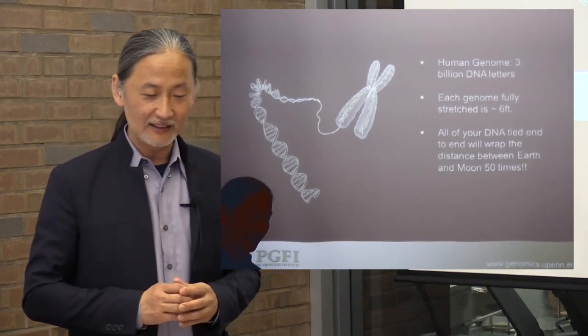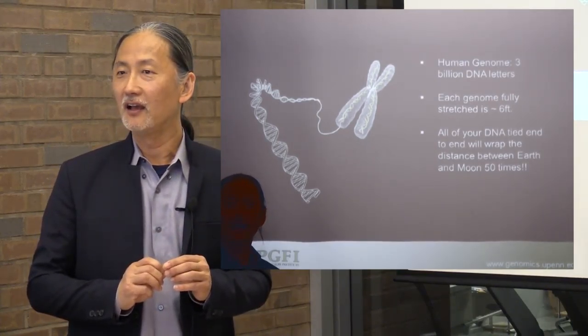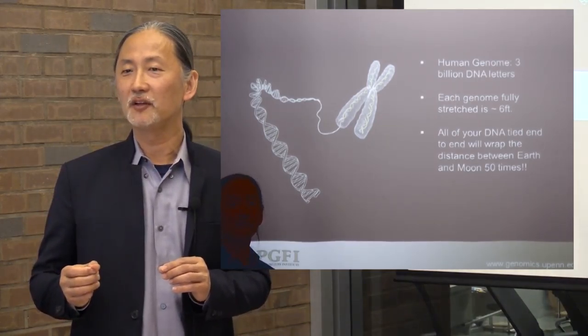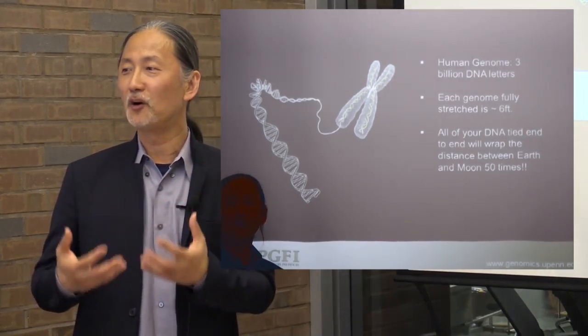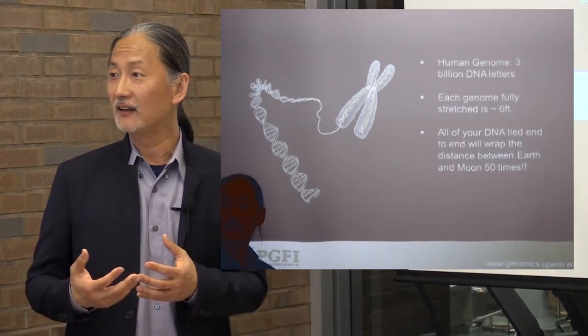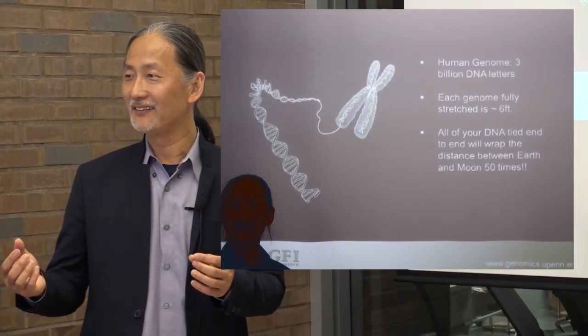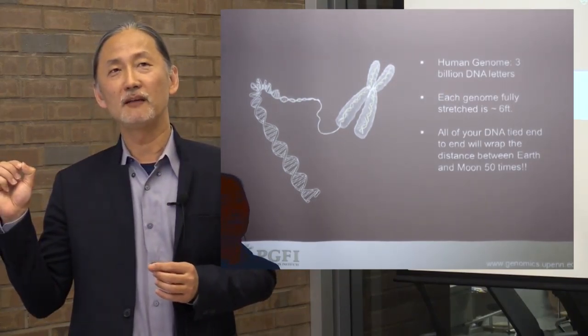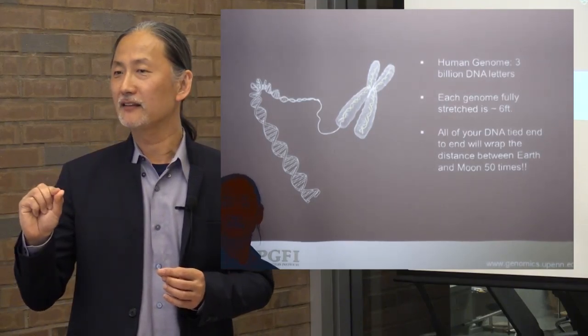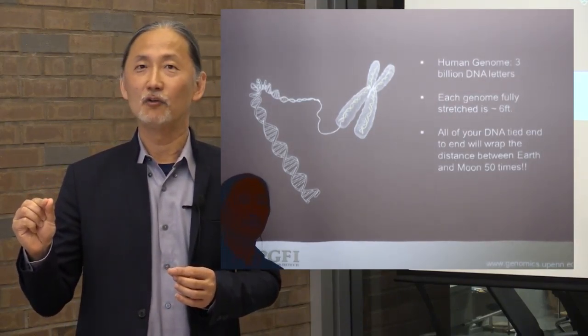One thing I find very useful in STEM sessions with high school students is getting them to think about all the different scales and measurements and how small things really are at the molecular level. If you took a letter of DNA and blew it up to the size of a grain of rice, your hand compared to a letter of DNA would be the size of the continental US. Everything we do in the lab is trying to manipulate individual DNA — it's like having a hand the size of the continental US trying to pick up individual grains of rice.